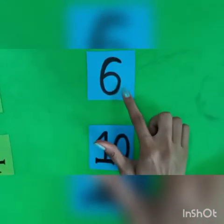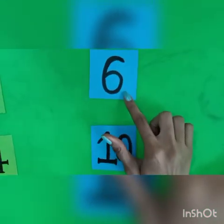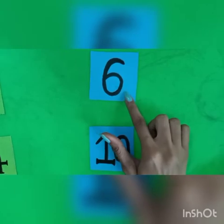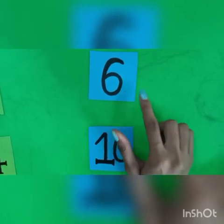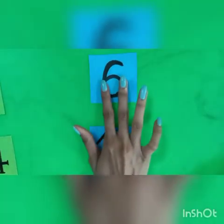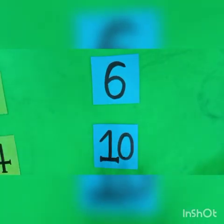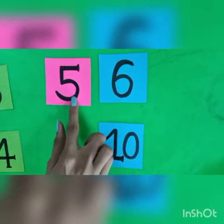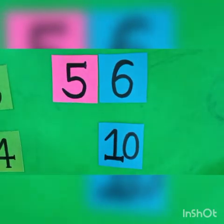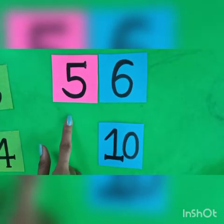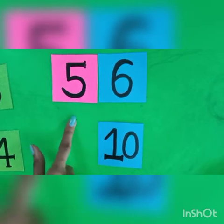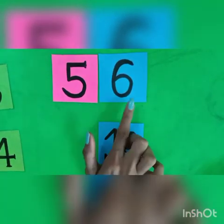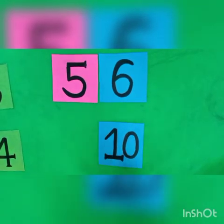Now tell me — which number is this? This is 6. Which number comes before 6? The answer is 5. 5 comes before 6.